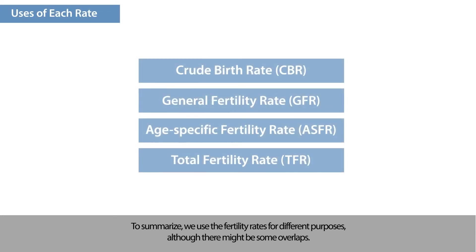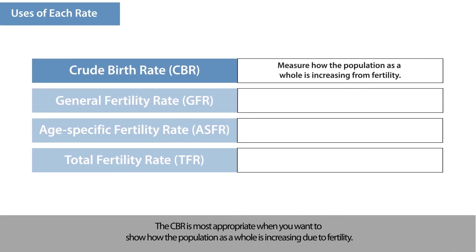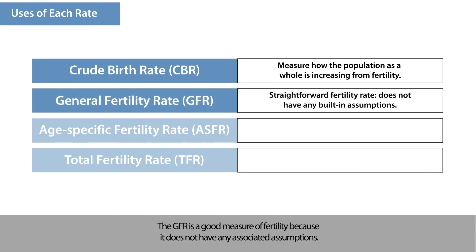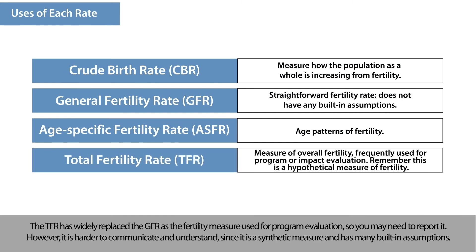To summarize, we use the fertility rates for different purposes, although there might be some overlaps. The CBR is most appropriate when you want to show how the population as a whole is increasing due to fertility. The GFR is a good measure of fertility because it does not have any associated assumptions. ASFRs are used when you want to see the age patterns of fertility. The TFR has widely replaced the GFR as the fertility measure used for program evaluation, though it is harder to communicate and understand since it is a synthetic measure with many built-in assumptions.